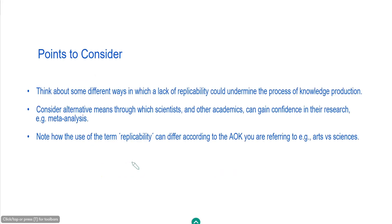Some points I recommend you consider when approaching this title. First, think about different ways in which a lack of replicability could undermine the process of knowledge production — for example, could it harm the credibility of a particular study or set of findings? Secondly, consider alternative means through which scientists, academics and researchers can gain confidence in their results, for example through meta-analysis — in other words, combining the results of multiple studies. Finally, note how the use of the term replicability can differ slightly according to the AOK you're referring to.